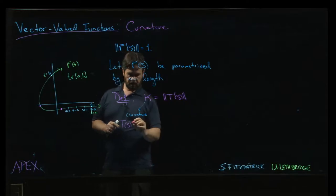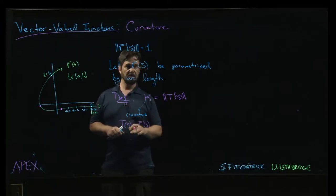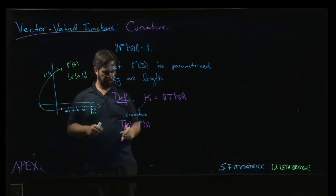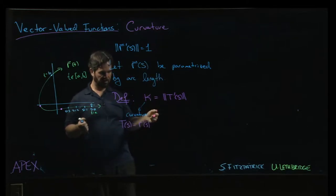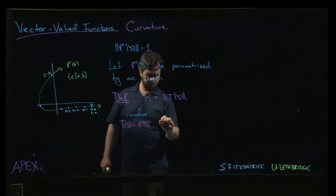T of s is R prime of s divided by the magnitude of R prime of s, but the magnitude of R prime of s is assumed to be one. So T of s should be R prime of s. T prime of s is dT/ds.